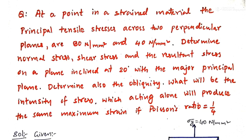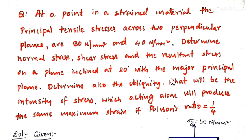We are solving a problem from the topic of principal stresses and strains. At a point in a strained material, the principal tensile stresses across two perpendicular planes are 80 N/mm² and 40 N/mm². Determine the normal stress, shear stress, and the resultant stress on a plane inclined at 20 degrees with the major principal plane.